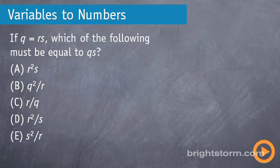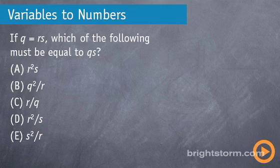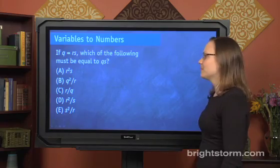If q equals r times s, which of the following must be equal to q times s? So yet again, we need to pick some numbers.